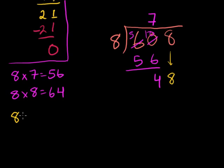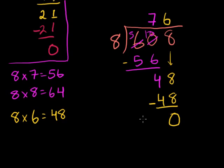8 goes into 48 how many times? 8 times 6 is exactly 48. So 8 goes into 48 six times. 6 times 8 is 48, and you subtract. 48 minus 48 is 0. So once again, we get a remainder of 0. Hopefully, that gives you the hang of how to do these larger division problems. And all we really need to know to tackle these is our multiplication tables up to maybe 10 times 10 or 12 times 12.